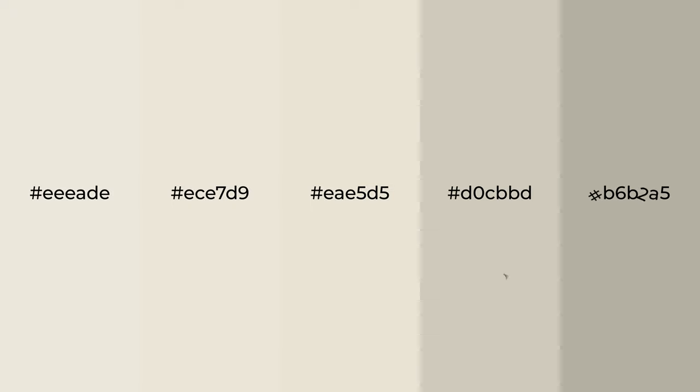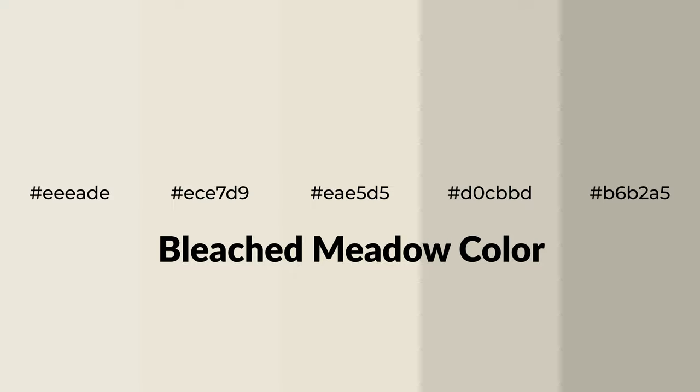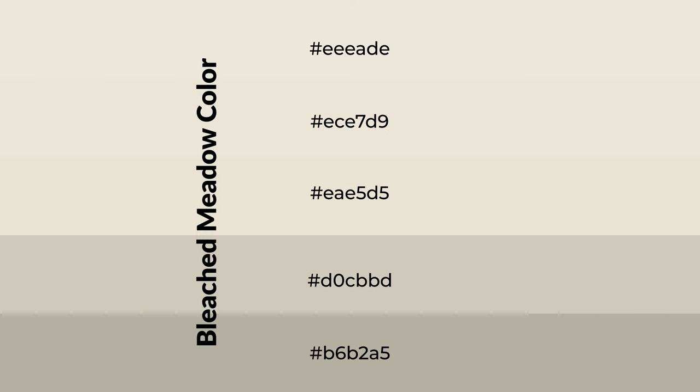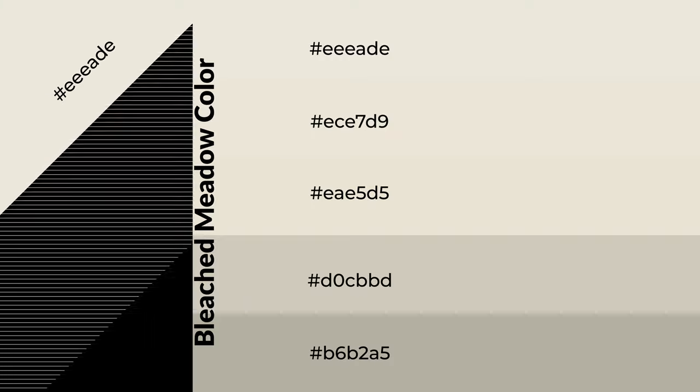Warm shades of bleached meadow color with green hue for your next project. To generate tints of a color, we add white to the color. Tints create light and exquisite emotions. To generate shades of a color, we add black to the color, and it is used in patterns, 3D effects, and layers. Shades create depth and drama.